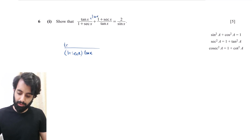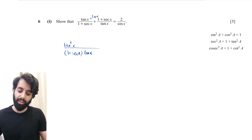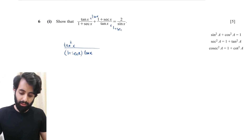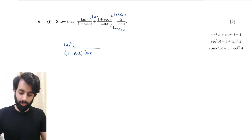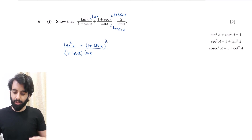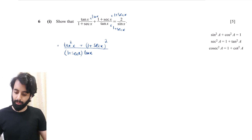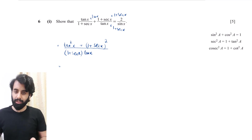Multiplying the first fraction by tan x gives tan squared x in the numerator. The second fraction needs to be multiplied by (1 + sec x), which means that term becomes (1 + sec x) the whole thing squared. I won't keep copying '= 2/sin x' — I'll just show that the left-hand side simplifies correctly.